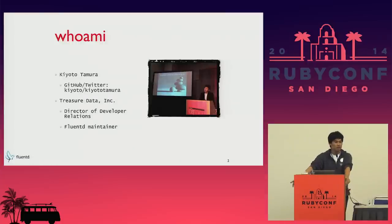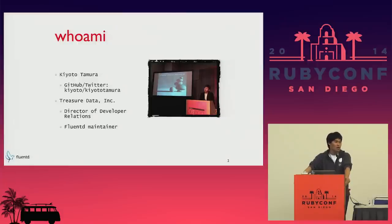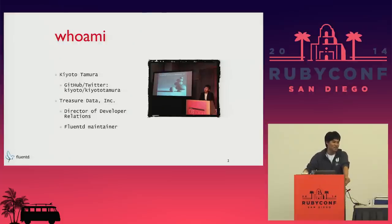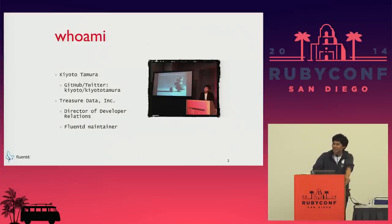So who am I? I am Kyoto Otamura — that's how you can harass me publicly. I work for a company called Treasure Data where I work as a developer relations person, which means I get to come to a cool event like this and listen to really smart people talk about open source. I also happen to be a Fluentd maintainer. Staying true to my Japanese heritage, I'm going to start with a bit of self-deprecation — except my self-deprecation is actually just true.